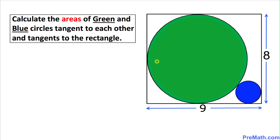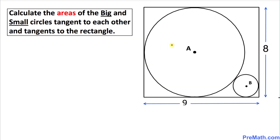Welcome to PreMath. In this video tutorial we are going to calculate the areas of these two circles. One of them is green and the smaller one is a blue circle, and they are tangent to each other.